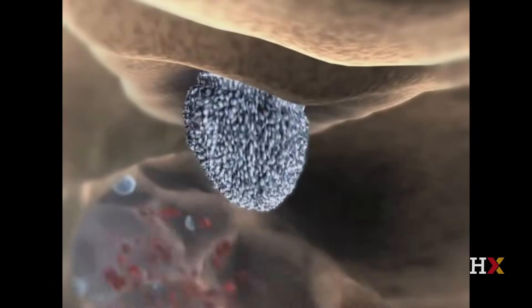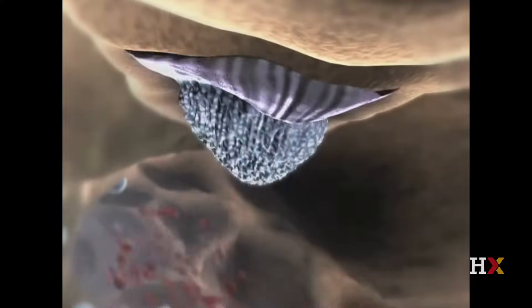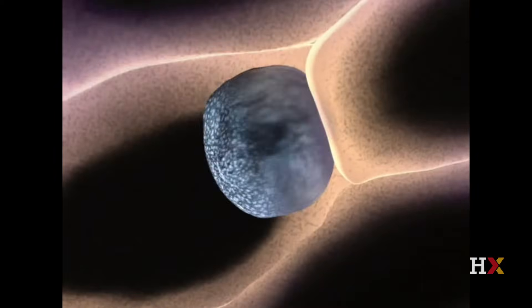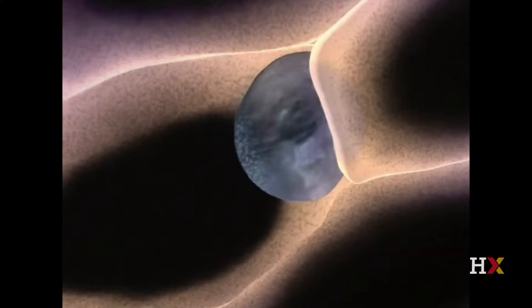The macrophage dramatically changes shape and squeezes in between two neighboring endothelial cells to go and fight infection in the tissue.